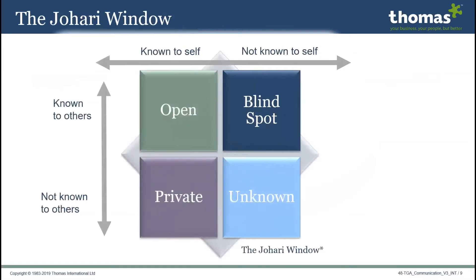Let's look at a model called the Johari Window, developed by Luft and Ingham. This is a communication model used to improve understanding between individuals and could assist you with becoming more aware of yourself as well as your team members. There are four quadrants: open, blind spot, private, and unknown, with two axes — known to others and known to self. The open quadrant is known to self and known to others — for example, I have brown eyes; both I and my colleagues know this. The private quadrant is known to self but not known to others — for example, I am afraid of clowns; I know this, but my colleagues might not.